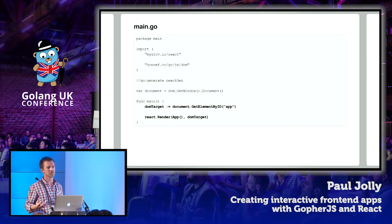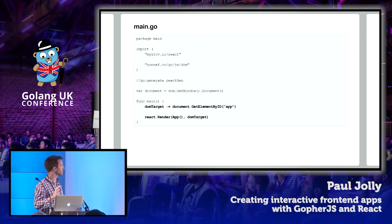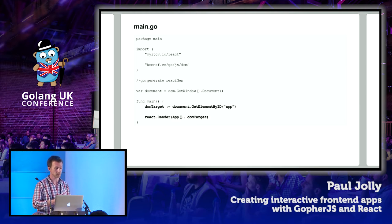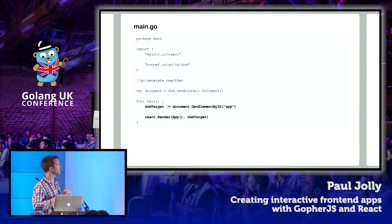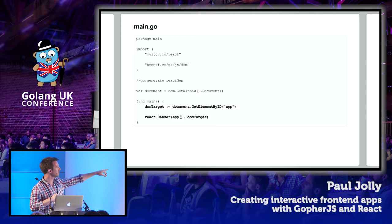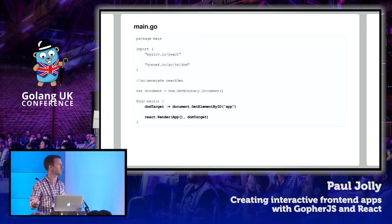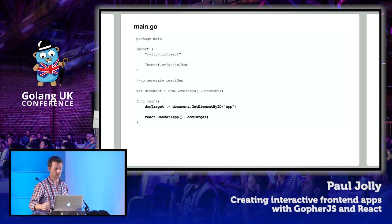Let's take a look at main.go. As its name suggests, this file is part of a main package. As a result of this being a main package, GopherJS runs the main function as a side effect of that script having been loaded. We're using the DOM package to get hold of a reference to the document — the DOM document. We're using the document to get at that div identified by the app ID. Then we're handing off to React to say: I want to render a component called app within that DOM element.